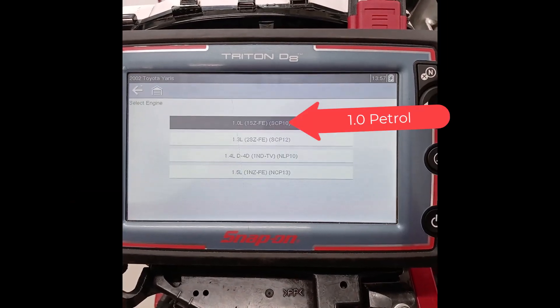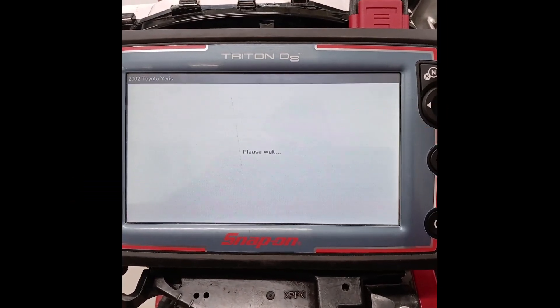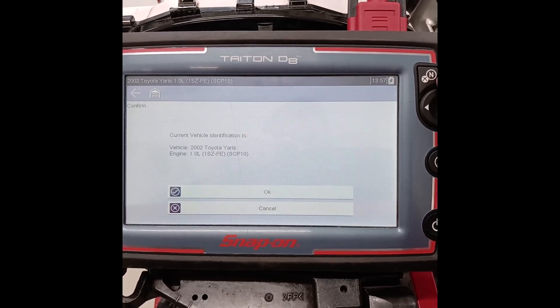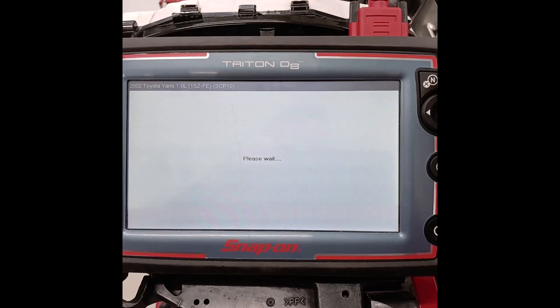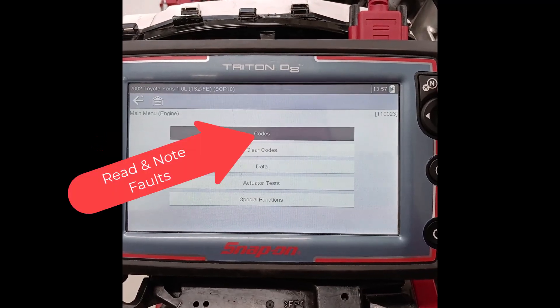Pick out a 1 liter petrol engine. Then we're going to pick the engine management system and we're going to read the fault codes.